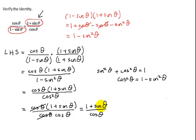And I get 1 plus sine theta over cosine theta. Is that what you're trying to prove? You have the right hand side. You are done. You proved the left hand side equaled the right hand side.